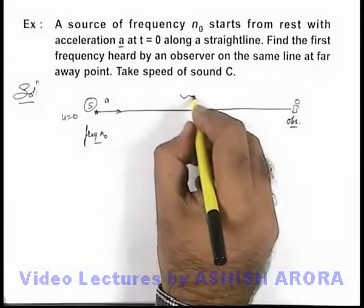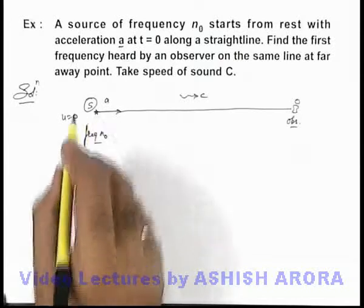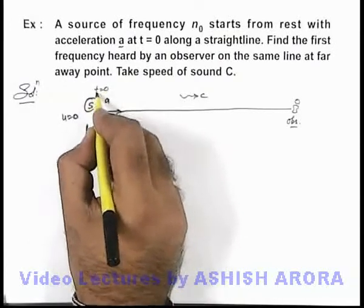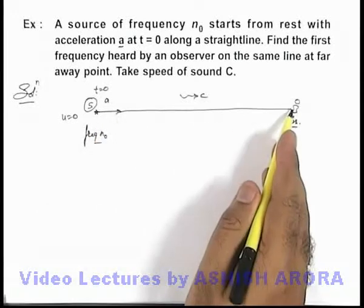Take speed of sound to be c. Say sound is traveling at speed c. And at t = 0, the source starts moving. Then we can say the first frequency observer will listen.